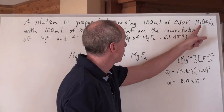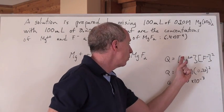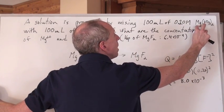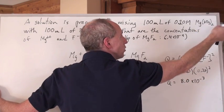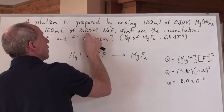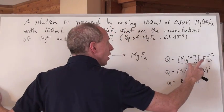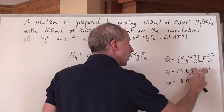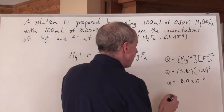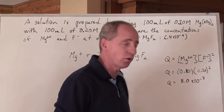What's Q equal to? The magnesium nitrate dissociates into one Mg²⁺ and two nitrate ions, so [Mg²⁺] = 0.2 mol/L. Sodium fluoride dissociates into Na⁺ and F⁻, so [F⁻] = 0.2 mol/L as well. Plugging those into the expression gives Q = (0.2)(0.2)² = 8×10⁻³.